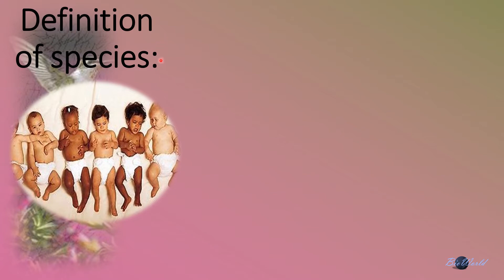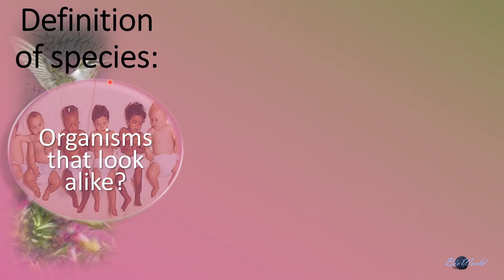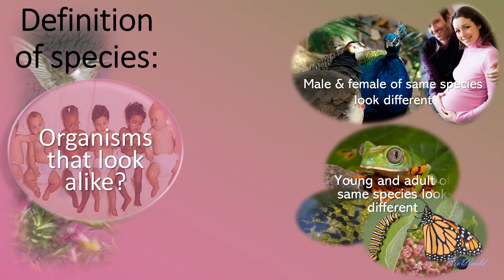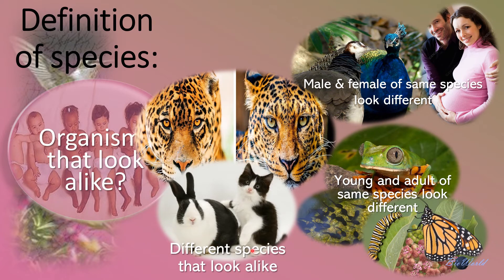The species is the final taxon in the Linnaeus hierarchy system. But what makes a species? Are organisms that look alike the same species? This simple definition is not accurate because the male and the female of the same species actually look different. Or, in some cases, the young and the adult of the same species look different. In yet another case, we have organisms that are actually different species but look alike. So, the definition that species are organisms that look alike is not accurate.